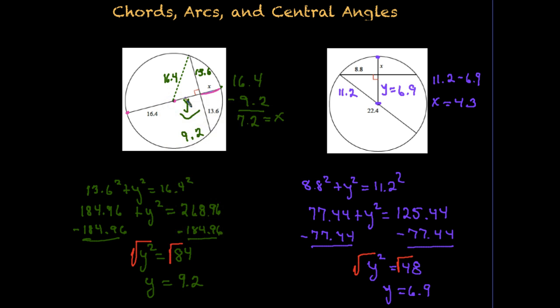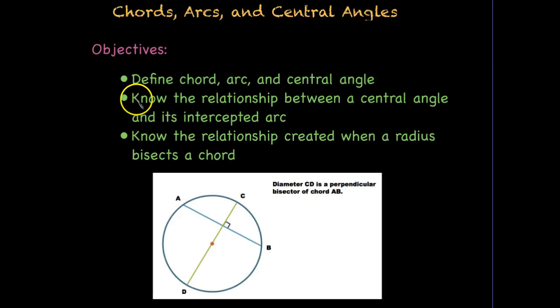That concludes our lesson today on chords, arcs, and central angles. Make sure you have these examples and theorems in your notes. You should understand what a chord, an arc, and a central angle are, the relationship between a central angle and its intercepted arc, and the relationship created when a radius bisects a chord — and be able to solve problems using that relationship.